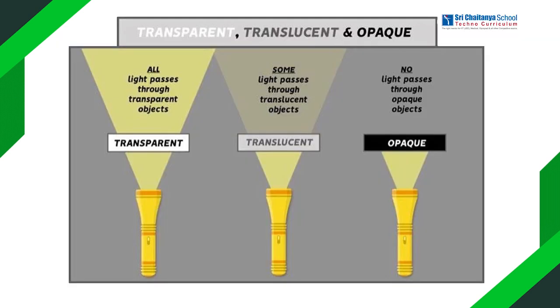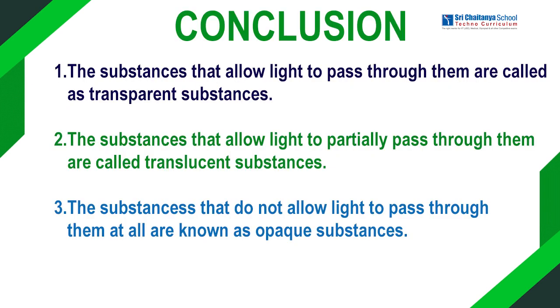And finally, conclusion. The substances that allow light to pass through them are called transparent substances. The substances that allow light to pass through them are called translucent substances. And the substances that do not allow light to pass through them at all are known as opaque substances. So, based on this experiment, we can easily categorize all these objects into transparent, translucent and opaque substances.